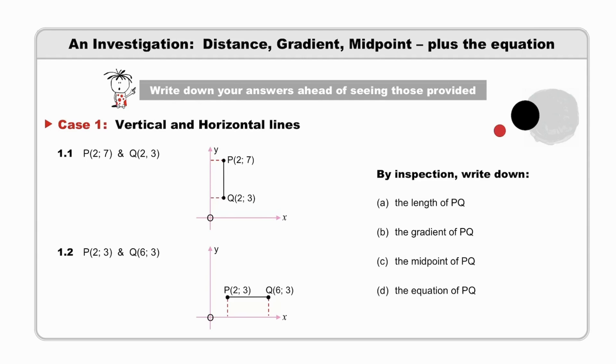First, investigate the situation. In Case 1, we have vertical and horizontal lines. In 1.1, the x-coordinates have the same value, and therefore the two points are beneath each other, and we have a vertical line. In 1.2, the y-coordinates have the same value, and therefore the two points are alongside each other, and we have a horizontal line.